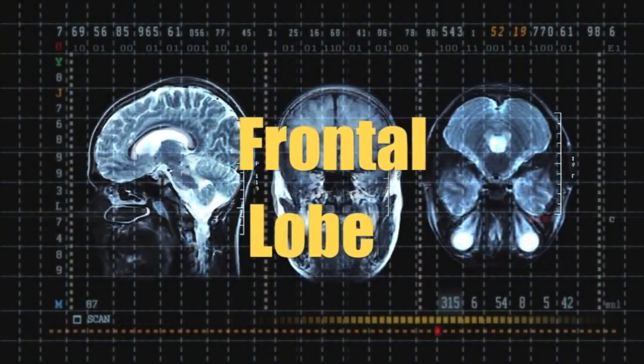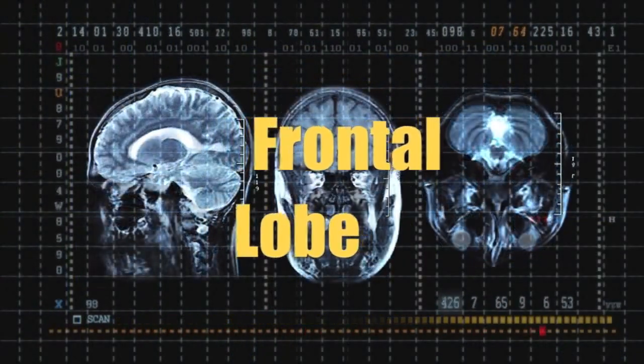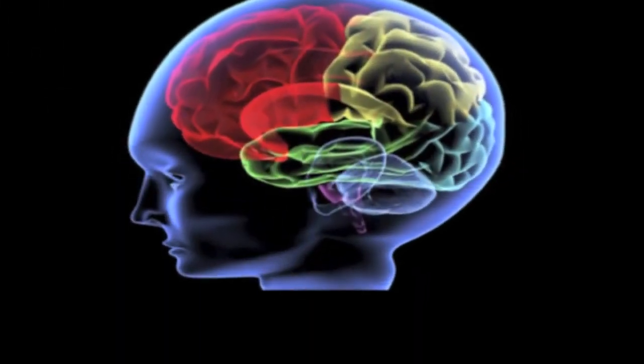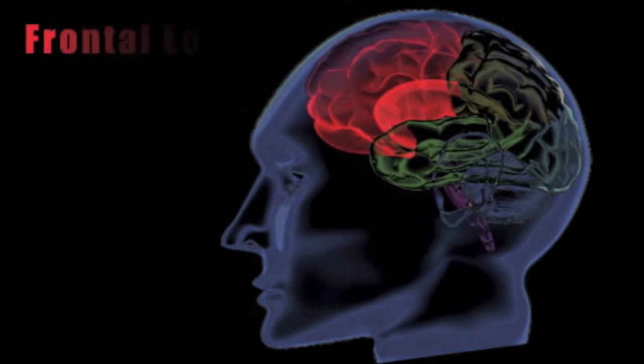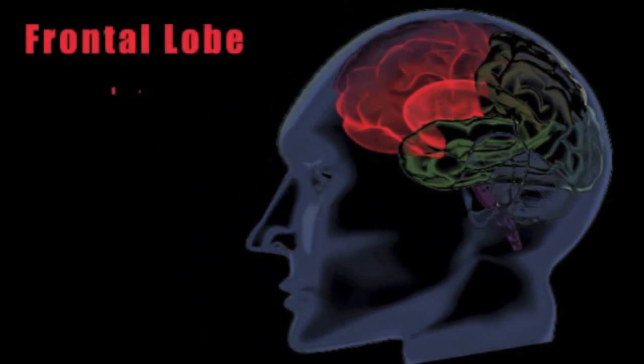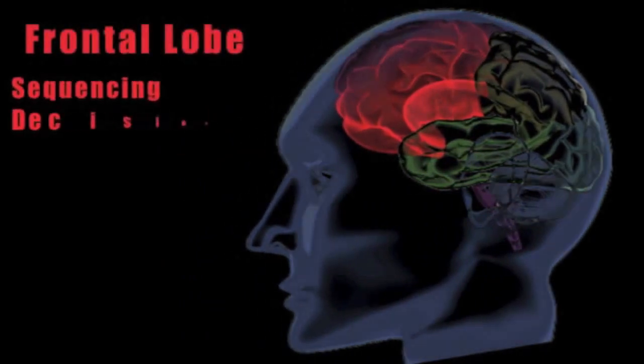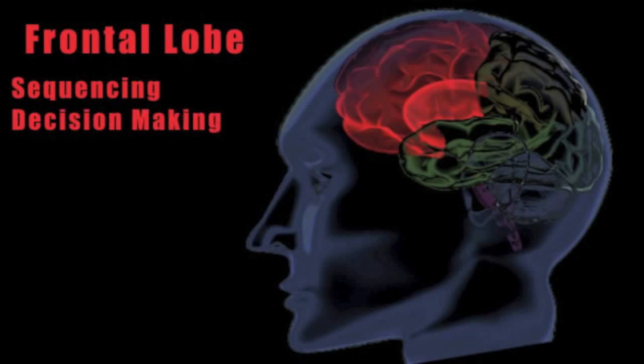Associated with the frontal lobe are various controls. It controls certain of our behaviors and certain of the things we do. And when it's injured, that has certain consequences. The changes seen when there is an injury to the frontal lobe include problems with sequencing and perseveration, where there's difficulty making decisions.